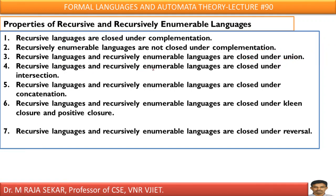Recursive language and recursively enumerable language are closed under intersection — not only under union, but also under intersection. They are also closed under concatenation. Concatenation means if L1 is a recursive language and L2 is a recursive language, then L1·L2 is also a recursive language. This holds true not only for recursive language but also for recursively enumerable language.